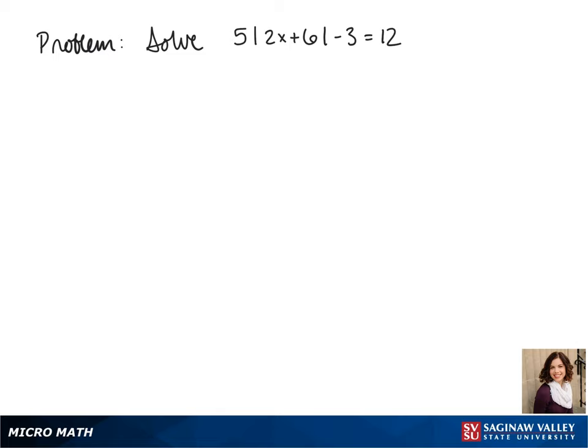Welcome to another day of algebra. Today we'll be solving for 5 times the absolute value of 2x plus 6 minus 3 equals 12.